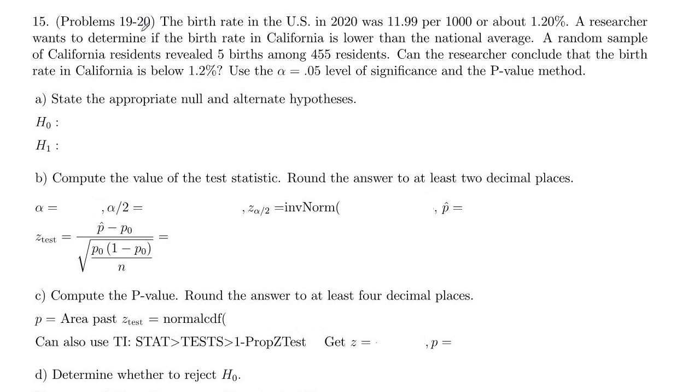This example is like Problems 19 and 20 in the Exam 3 review. We are looking at the birth rate in the U.S., which in 2020 was 11.99 per 1,000, which is about 1.2%. A researcher wants to determine that the birth rate in California is lower than the national average.